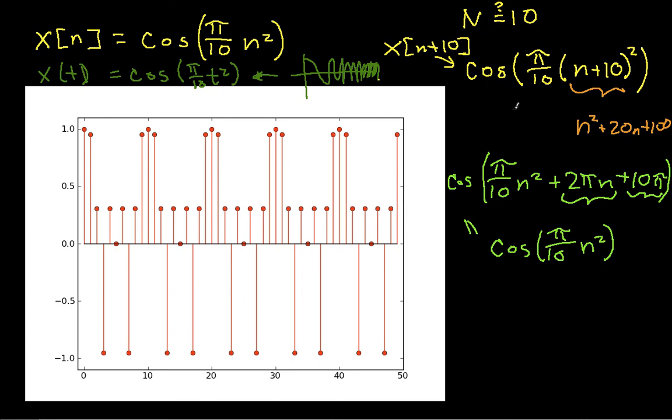So it turns out that this signal, contrary to everything that I thought was obvious, is periodic with period 10. This is something that, this is one of those strange things that happens with discrete time signals that makes the intuition that you've built with continuous time signals be a little shaky. Well, we're almost done. One last case.